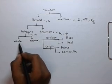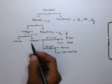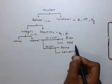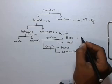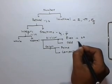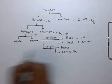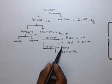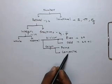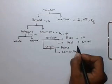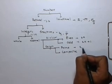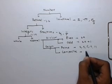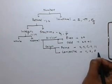Integers can be classified into whole numbers and natural numbers. Natural numbers, on the basis of divisor, can be classified into even numbers and odd numbers. Even numbers can be written in the form of 2K, while odd numbers can be written in the form of 2K plus 1. On the basis of origin, natural numbers can be classified into prime numbers and composite numbers. Prime numbers are 2, 3, 5, 7, 11, etc., while composite numbers are 4, 6, 8, etc.